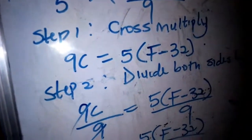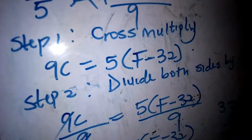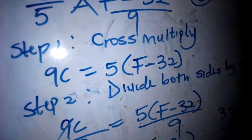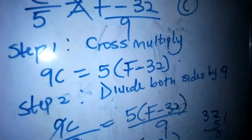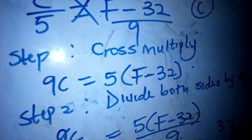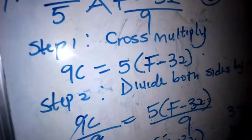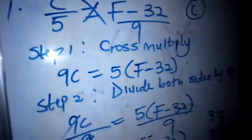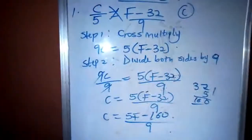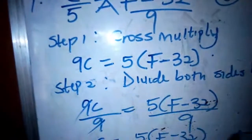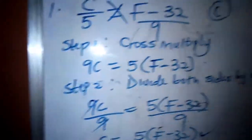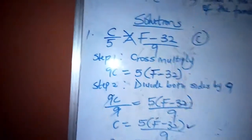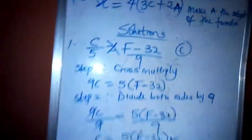Opening the bracket: 5 times F is 5F, and 5 times 32 is 160, so that gives us 5F minus 160 over 9. You can decide to open the bracket or just leave it as 5(F minus 32) over 9. Both are actually correct. So we have made C the subject of the formula.